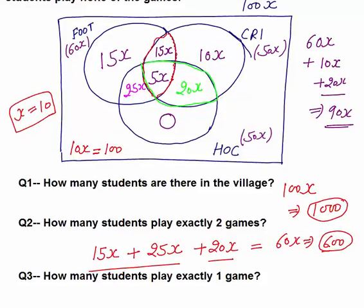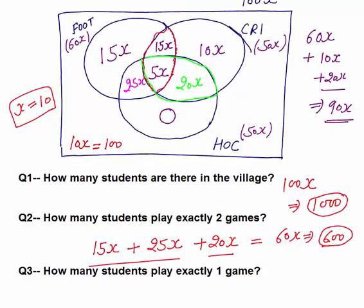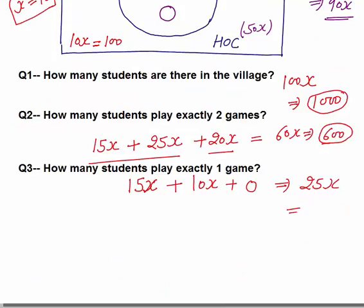Question 3: How many students play exactly 1 game? Football only is 15x, cricket only is 10x, hockey only is 0. Total is 25x. With x = 10, the answer is 250 students.